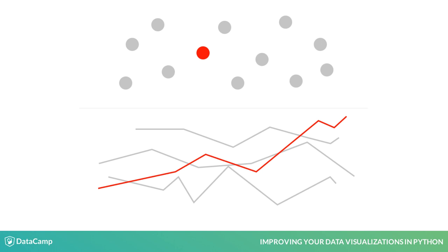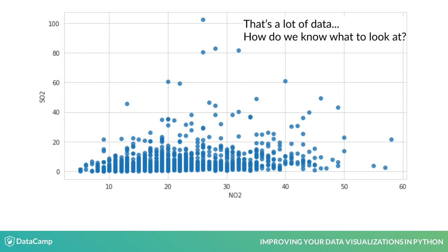Now on to visualization techniques. The first technique we're going to talk about is simple and often extremely effective: highlighting specific data points to draw attention to them. Often when you display a lot of data to an audience, you face a conundrum — you want to show all of your data, but you also want people to focus on a specific interesting point or set of points. The easiest way is to plot all of the data points, but how do you avoid a specific point of interest getting lost?